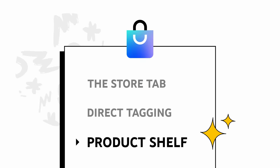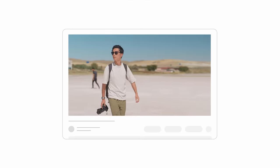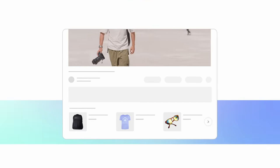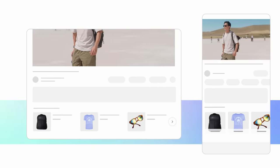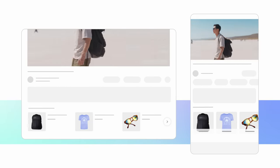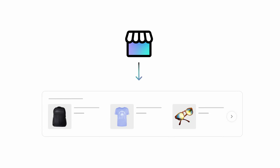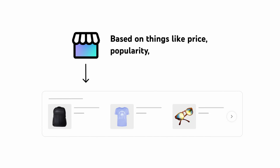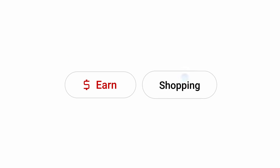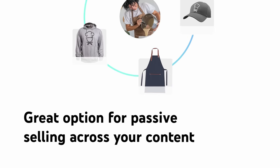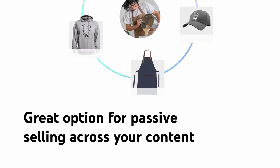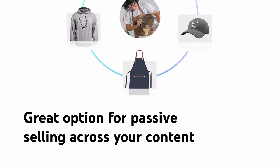Finally, let's talk about the product shelf. When you have a store connected to your channel, the automatic product shelf will appear under all of your videos where you haven't tagged specific products. The product shelf will pull products from your store automatically based on things like price, popularity, and availability, but you can customize by going to Earn, then Shopping, then Create Own Selection. This is a great option for passive selling across your content where you don't necessarily feature specific products.